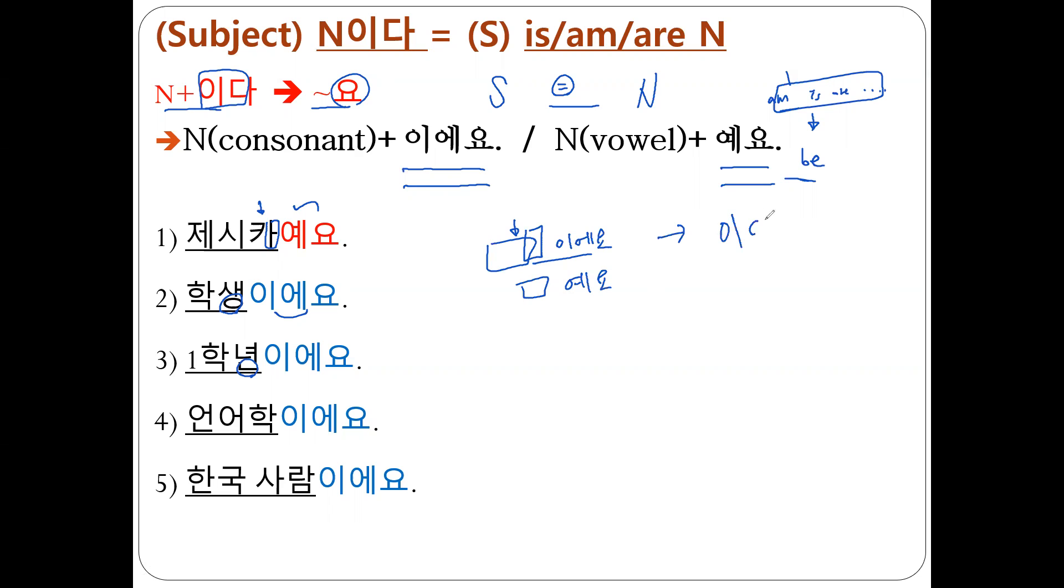We don't have in Korean 에요 없어요. We don't have. We don't have 에요 없어요. We don't have. Actually, 예 can be regarded as a shortened form for 이에. So, if you write this way, then it means 예요. It doesn't make sense to us. Okay?